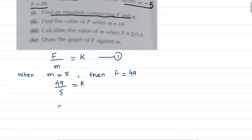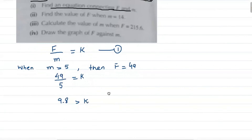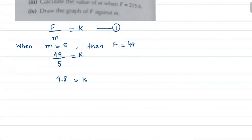So K equals 49 over 5, which is 9.8. Therefore K equals 9.8.